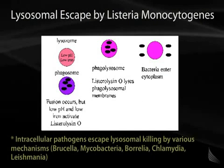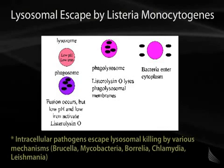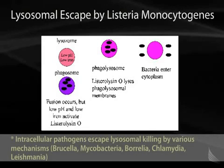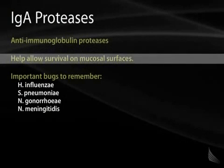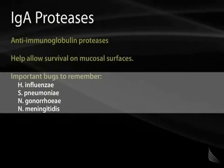Some bacteria have developed mechanisms to evade the phagolysosome. Listeria monocytogenes has listeriolysin O, a protein activated at low pH that lyses the phagolysosomal membranes, releasing the bacteria into the cytoplasm. Other intracellular pathogens that escape lysosomal degradation include Brucella, Mycobacteria, Borrelia, Chlamydia, and Leishmania. IgA proteases are anti-immunoglobulin proteases that allow survival on mucosal surfaces. Important bugs with IgA proteases include H. influenzae, Pneumococcus, Neisseria gonorrhoeae, and Neisseria meningitidis.